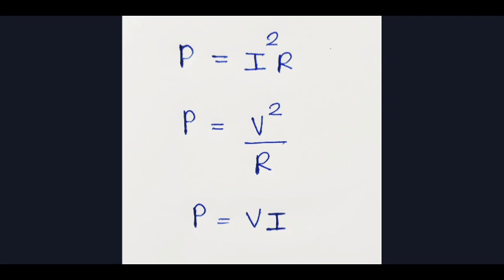Now, using V is equal to IR, I is equal to V by R, the electric power equations are: P is equal to I squared R, P is equal to V squared by R, and P is equal to VI.